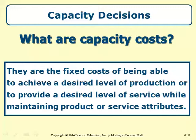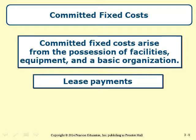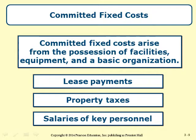Capacity costs are the fixed costs of being able to achieve a desired level of production or to provide a desired level of service while maintaining product or service attributes such as quality. Most companies make capacity decisions infrequently and consider them strategic because large amounts of resources are involved, and an incorrect capacity decision can have serious consequences for competitiveness. A company's committed fixed costs usually arise from the possession of facilities, equipment, and basic organizational structure, and may include mortgage or lease payments, interest payments, long-term debt, property taxes, insurance, and salaries of key personnel.